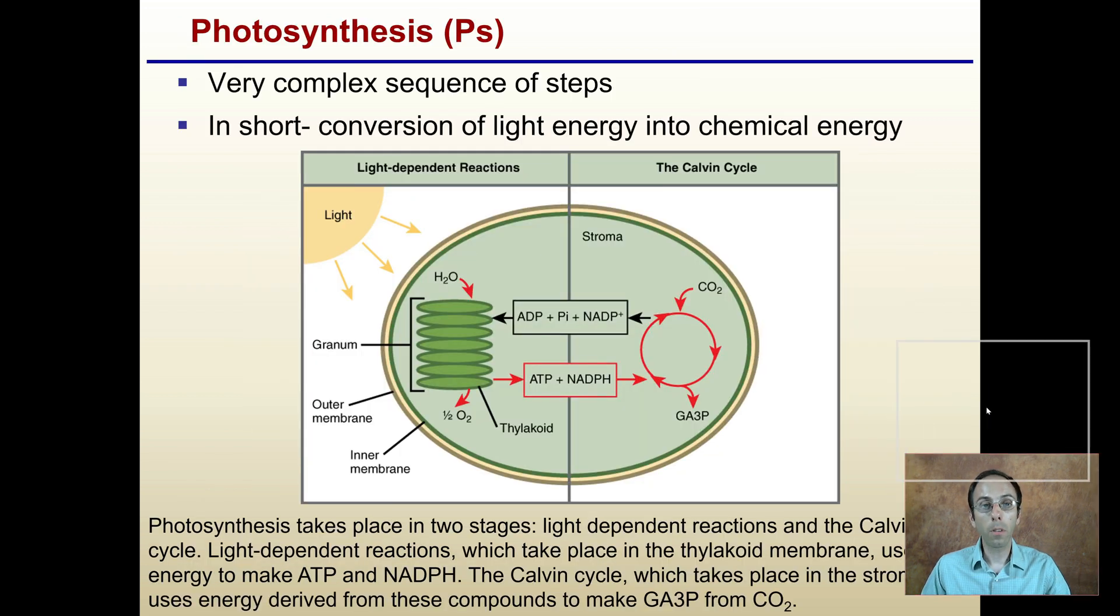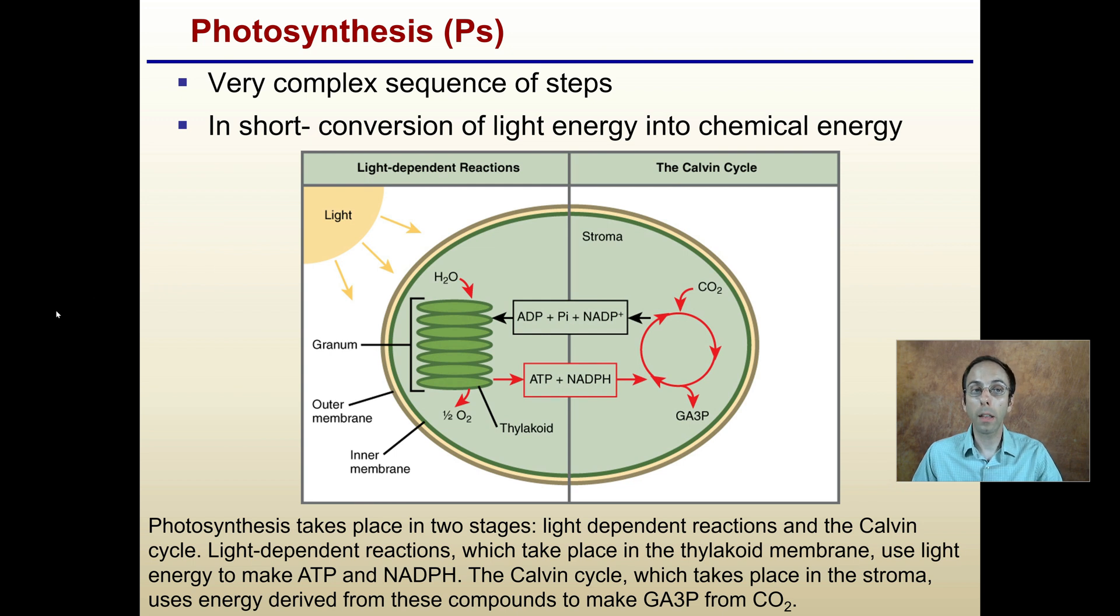Within photosynthesis, it's a very complex sequence of steps. In short, though, it's a conversion of light energy into chemical energy. It takes place in two stages: the light-dependent reaction, and then the Calvin cycle, or the light-independent reaction.